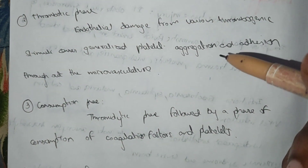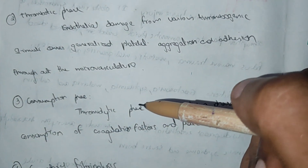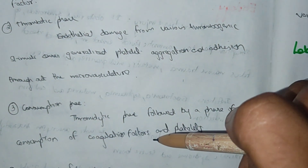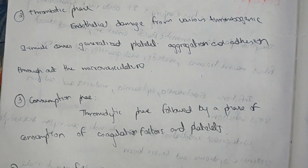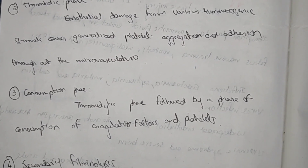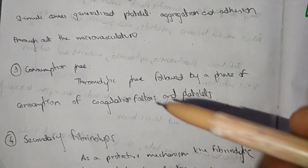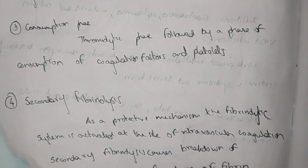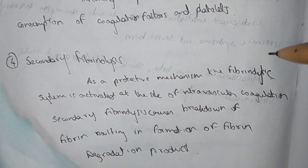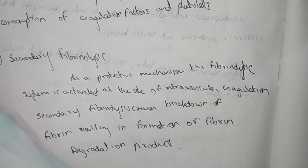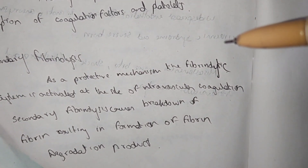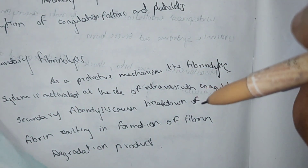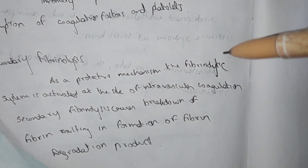Through the microvasculature, the thrombotic phase is followed by the consumption phase. The coagulation factors and platelets are consumed. Secondary fibrinolysis is a protective mechanism of the fibrinolytic system. Due to the intravascular coagulation, secondary fibrinolysis gets activated, causing the breakdown of fibrin. This results in formation of fibrin degradation products due to the breakdown of fibrin.